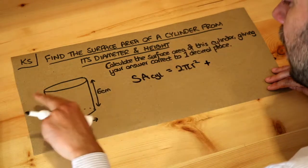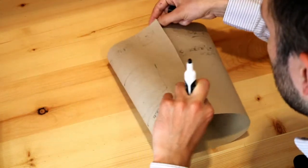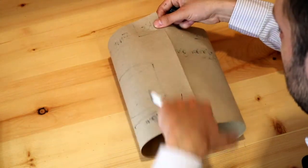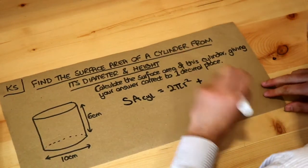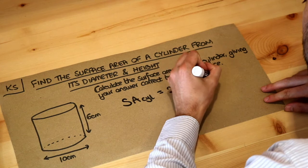The curved surface area, if I just fold this to form a cylinder and also make a slit here, I get this rectangle and that area is 2πrh.